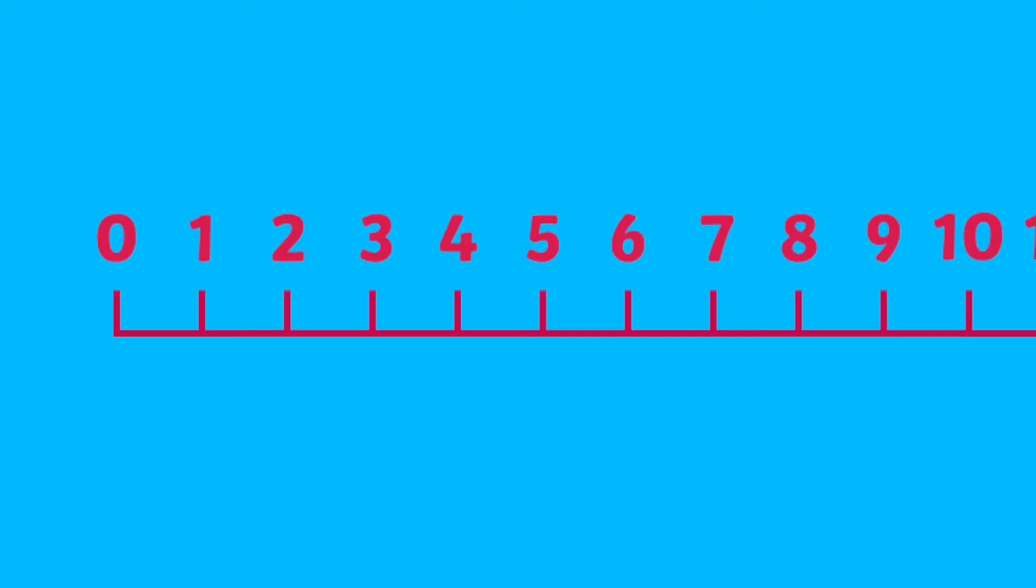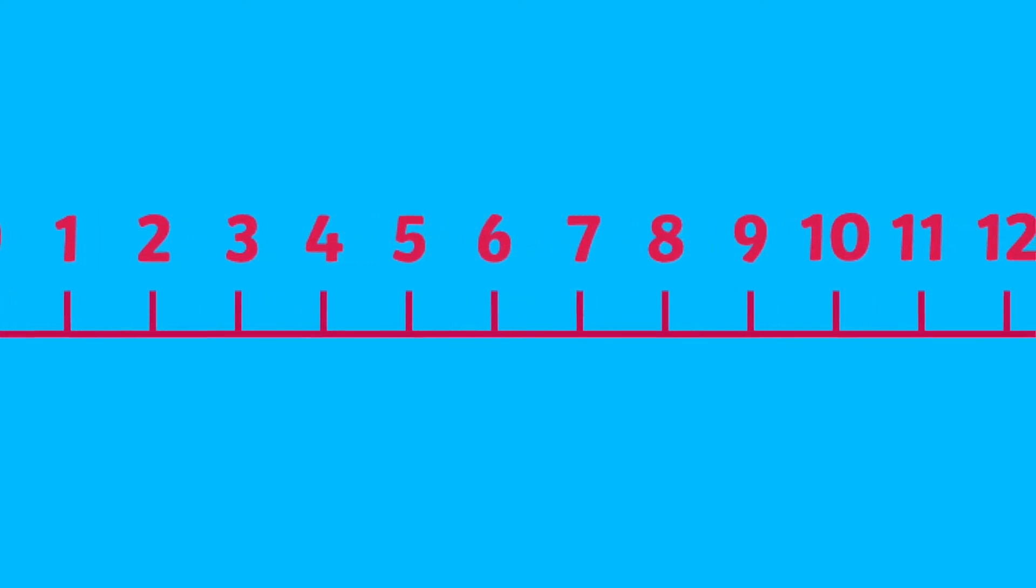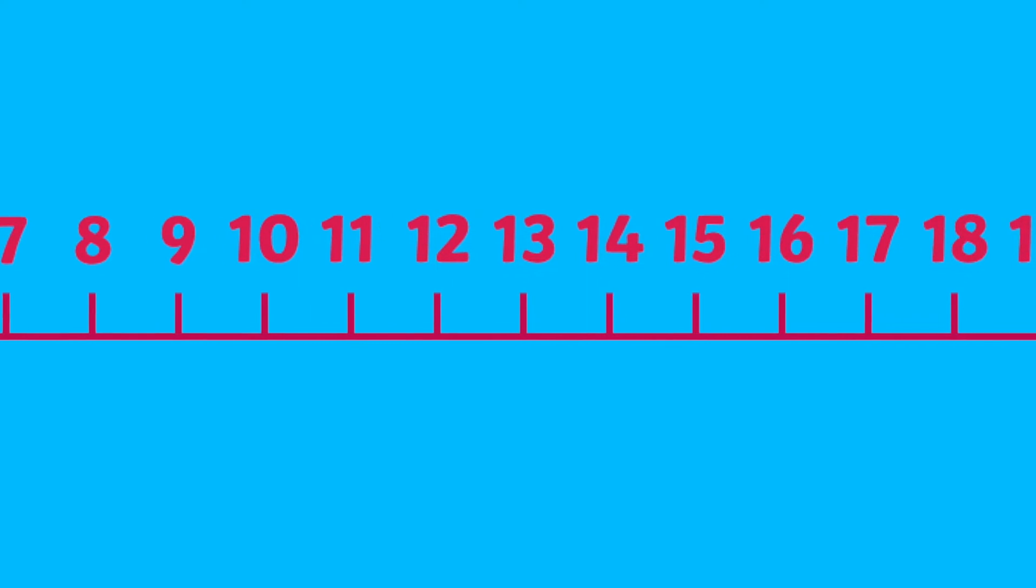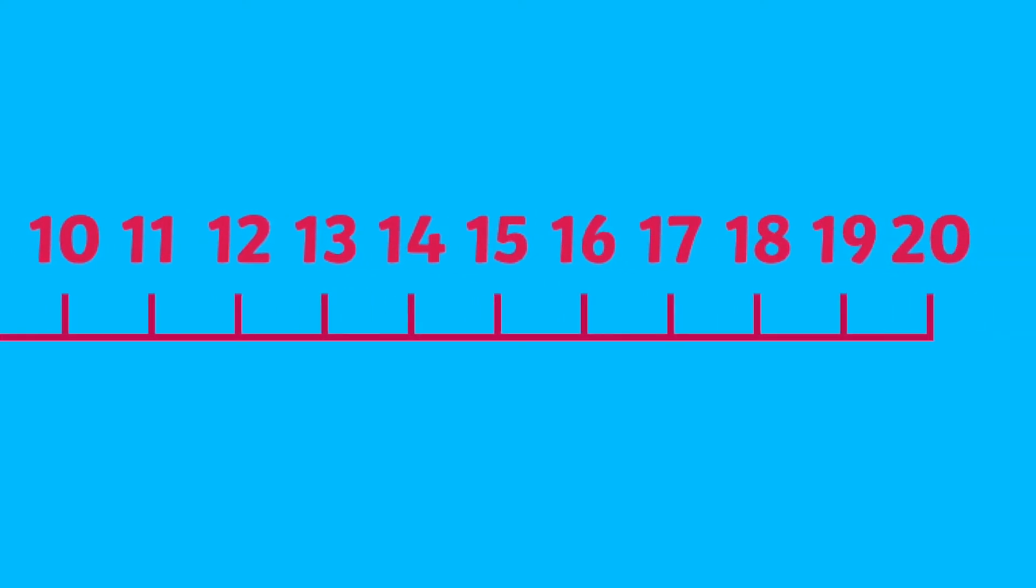A number line is a line, usually straight and horizontal, with numbers placed at even increments along the length. The numbers included on the line determine how the number line is meant to be used.